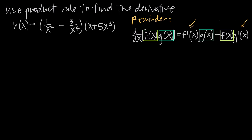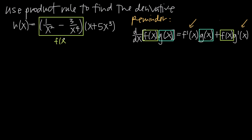Our first step is to identify f and g in our function. We have the function h, and the easiest way to divide this into two functions is to take each binomial factor. So we say this first factor is f, and the second factor is g, because both are just functions of x multiplied together.